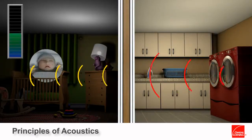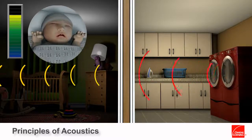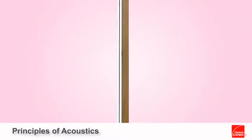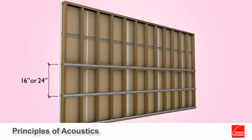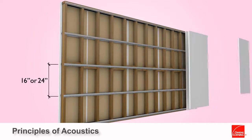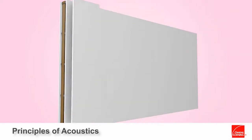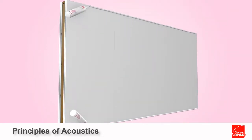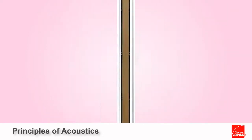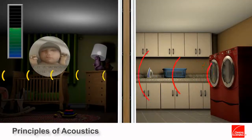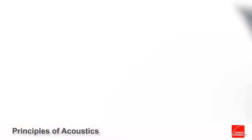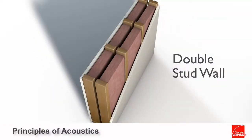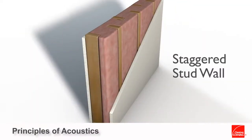Next, we can break and isolate the sound path by introducing intentional sound breaks between components within partitions. Installing resilient channels on walls is an example of creating an acoustic break and isolating noise vibrations between the gypsum board and framing members of the studs. These techniques inhibit and isolate sound waves from being transmitted directly through a partition. Another important technique to break the sound path is by installing a double stud wall or staggered stud wall.